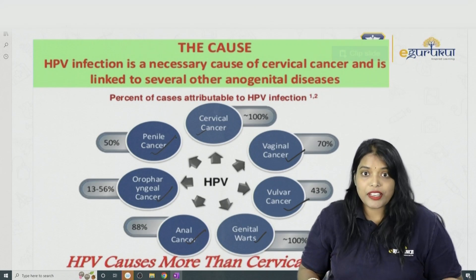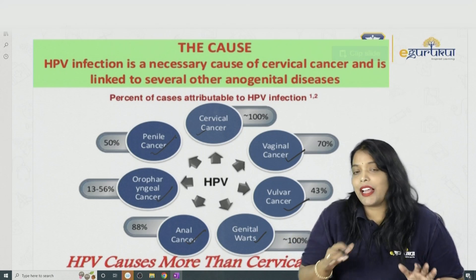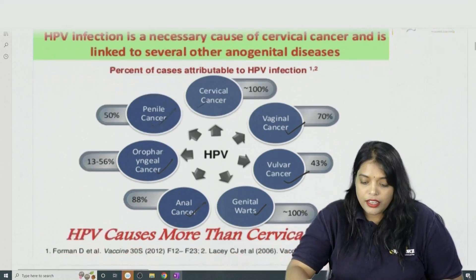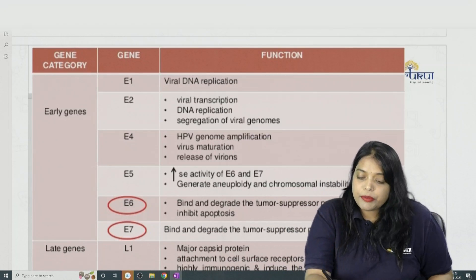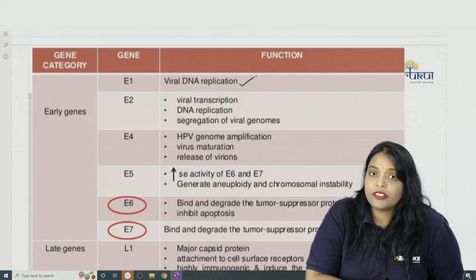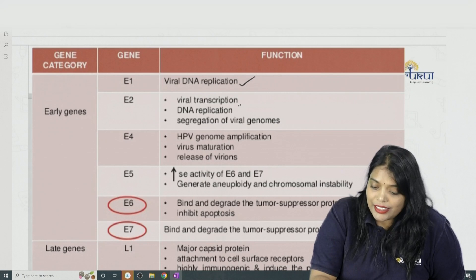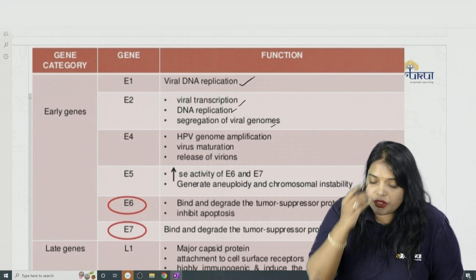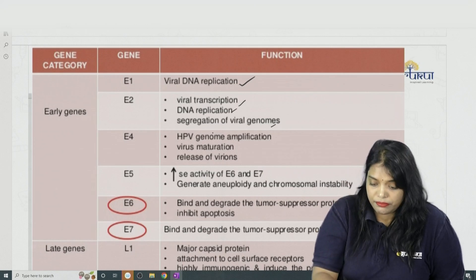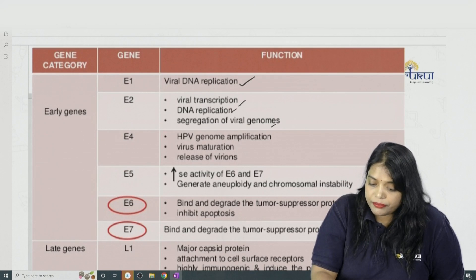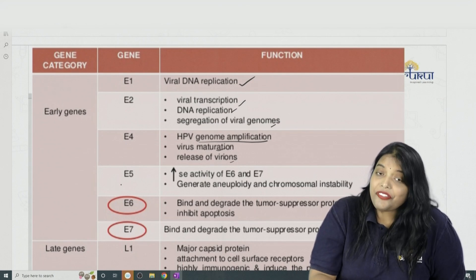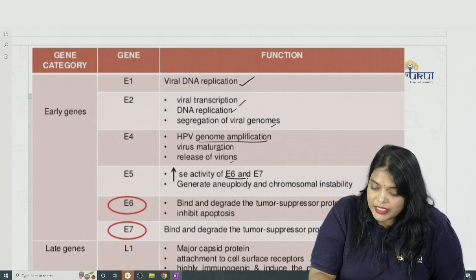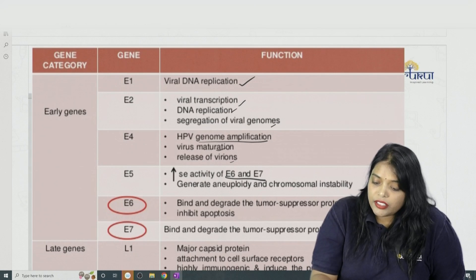Regarding the HPV proteins: E1 helps in viral DNA replication. E2 helps in viral transcription, DNA replication, and segregation of viral genes. E4 helps in genome amplification, viral maturation, and release of virions. E5 augments the activity of E6 and E7.